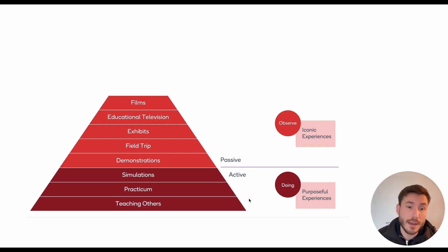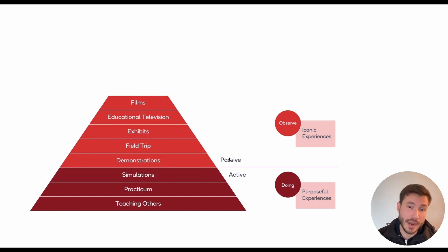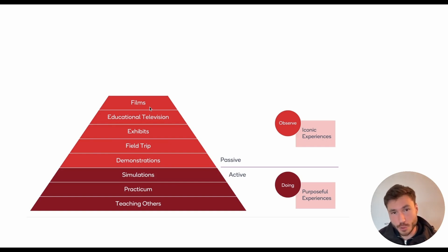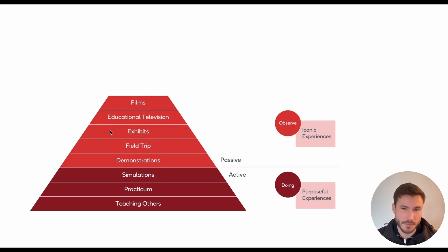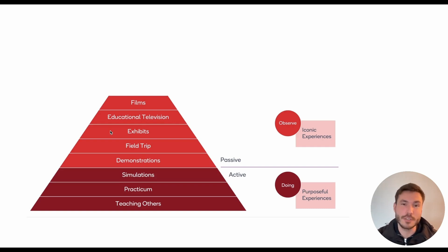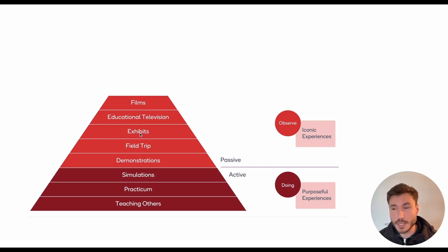Then on top of that, you have things like films, educational television, exhibits, field trips, and demonstrations — and here we are entering the passive part. When you're watching movies, or like in the YouTube survey, people who are just watching my tutorials — that would be educational television. Or if in school you went to a museum, it's very passive. You're just listening and observing, like watching a teacher do chemical demonstrations. You don't engage with your own hands and actions, so you lose a lot of potential to really learn and remember things.